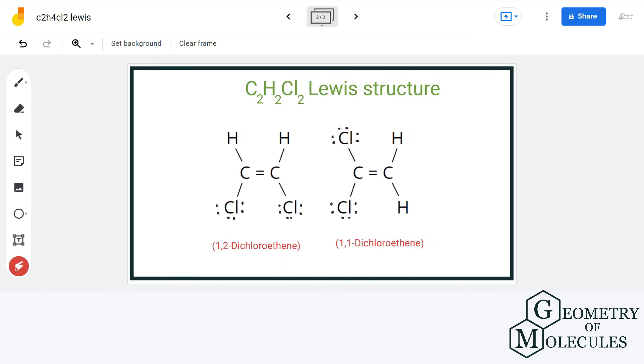Now there is another way of arranging the atoms around carbon by attaching two chlorine atoms on one carbon and the two hydrogen atoms on the other. Accordingly, the Lewis structure is drawn. Such compounds having the same formula but different structure are called isomers.